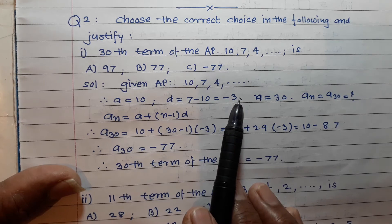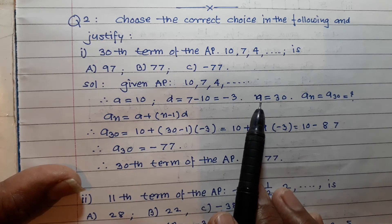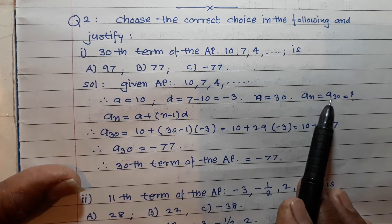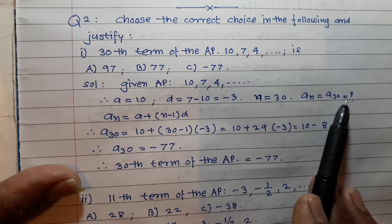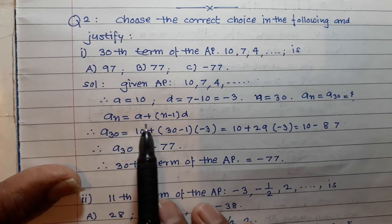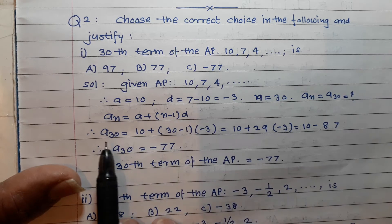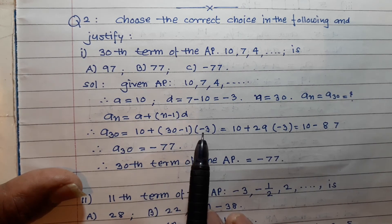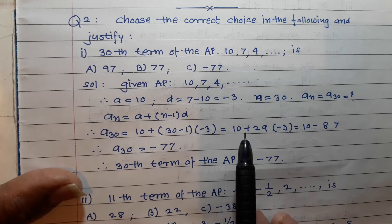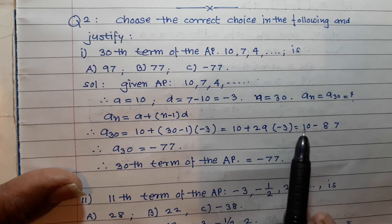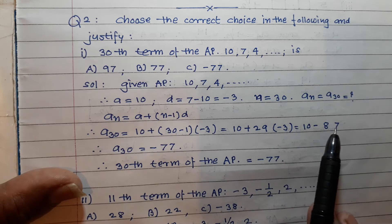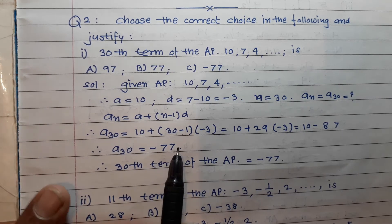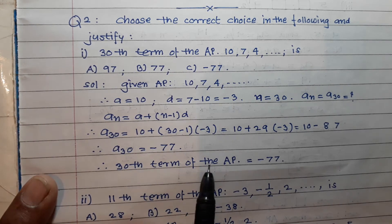Solution: given AP is 10, 7, 4, ... so a = 10, d = 7 - 10 = -3, n = 30. Using aₙ = a + (n-1)d: a₃₀ = 10 + (30-1) × (-3) = 10 + 29 × (-3) = 10 - 87 = -77. Therefore the 30th term is -77.